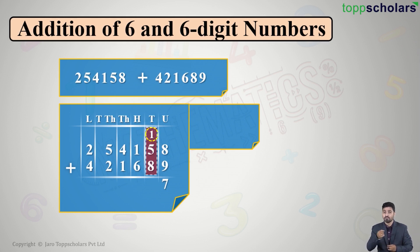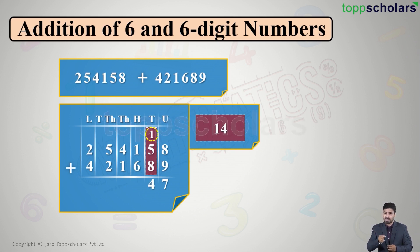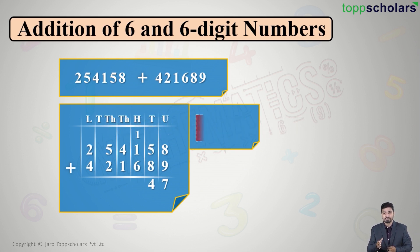In the tens column we have one carried forward, added to five and eight. So one plus five plus eight equals fourteen — again a two digit number. We write four in the tens column and one gets carried forward to the next column.